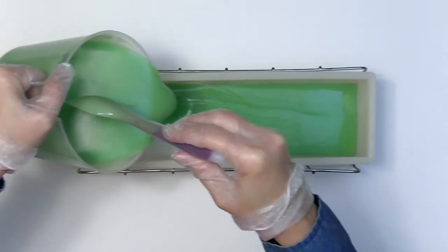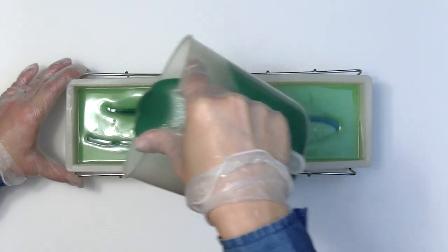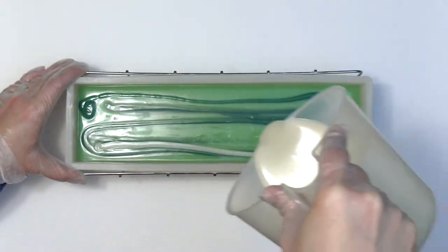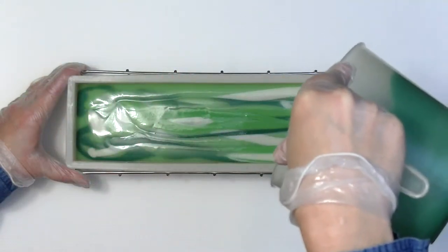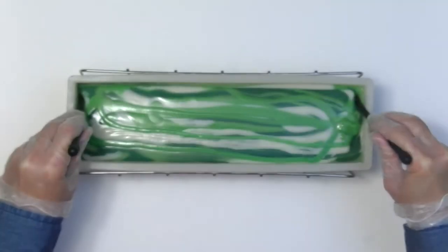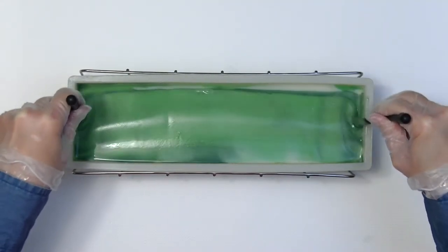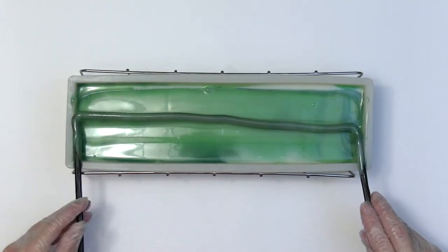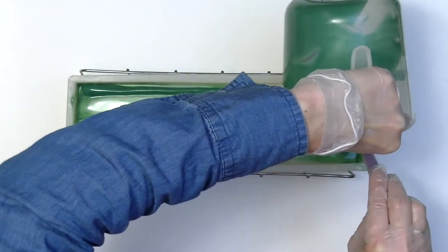Now for the mold. I'm doing a drop swirl first, alternating the colors, then a hanger swirl with my gear tie. I'll add the extra soap on top.